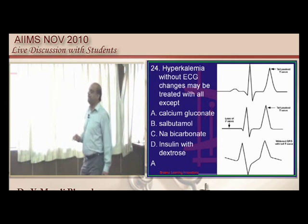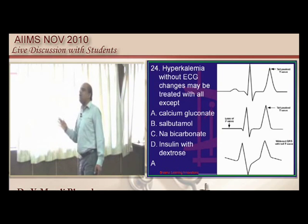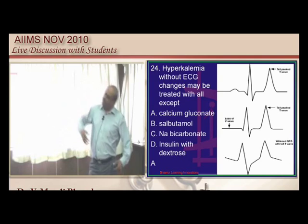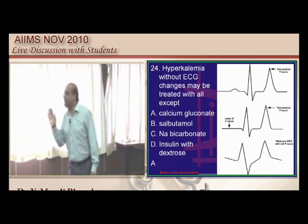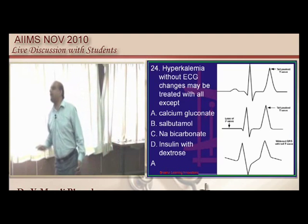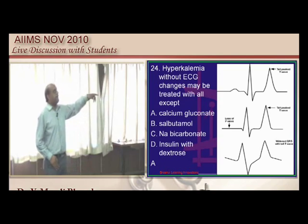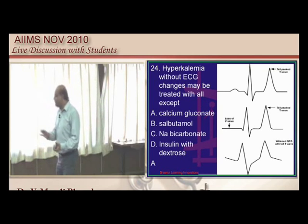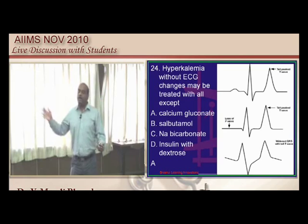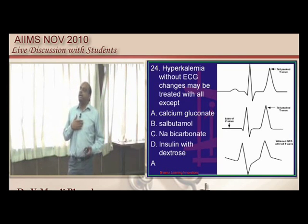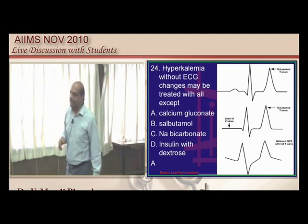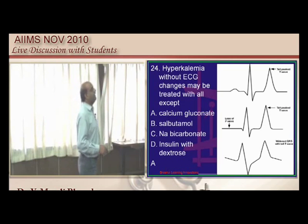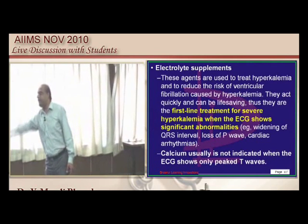How do you treat hyperkalemia? For every patient you want to give calcium gluconate, but the basic rule is: if ECG changes do not appear — tall peaked T waves, loss of P waves, widening of QRS — it is not required to give calcium gluconate. The main purpose of calcium gluconate is not to decrease potassium; it is to protect the heart from going into ventricular arrhythmias. We do not give it if there are no ECG changes.